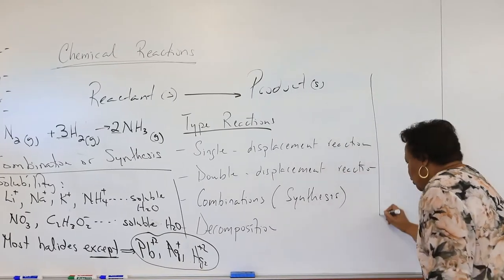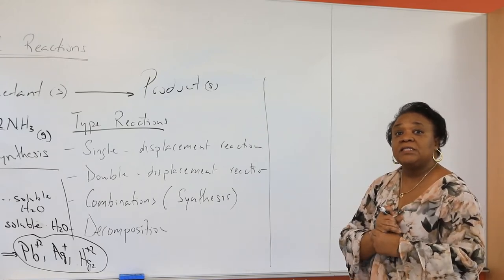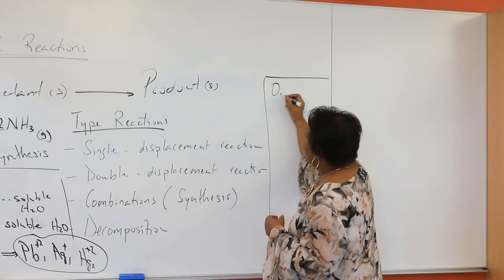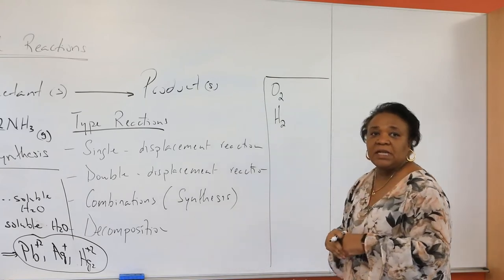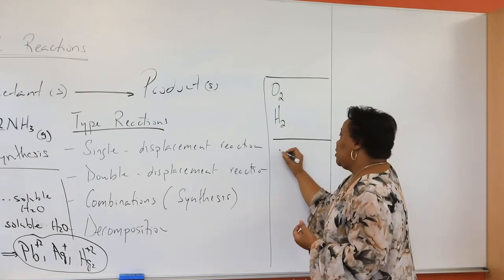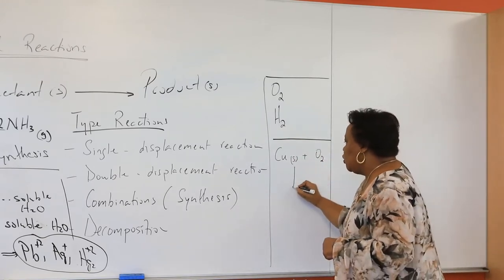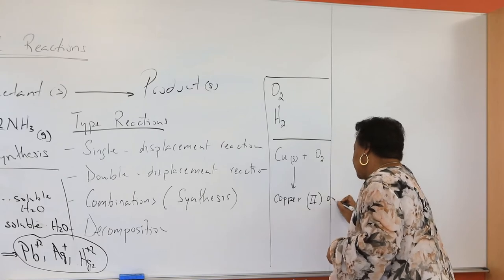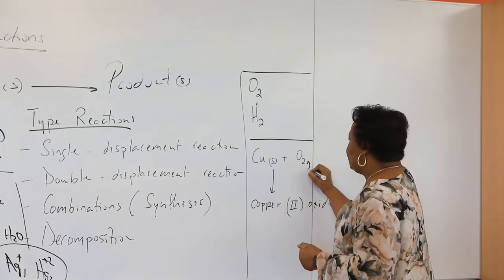When balancing these equations, do not forget that some elements exist as diatomic molecules. Oxygen is not just O — oxygen exists as the diatomic molecule O₂. Hydrogen, which might also be produced in today's lab, exists as H₂. As a hint: if you take copper solid and heat it — as we did in a previous experiment — don't forget that the product is actually a black solid, copper 2 oxide. I'll have you figure out the chemical formula and then go back and balance that equation.